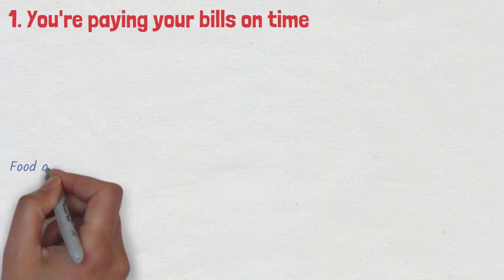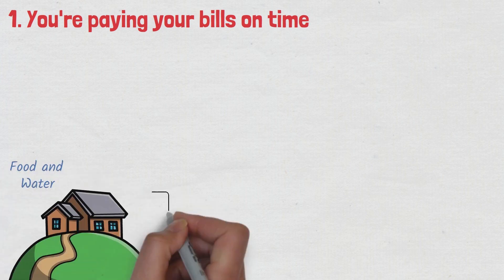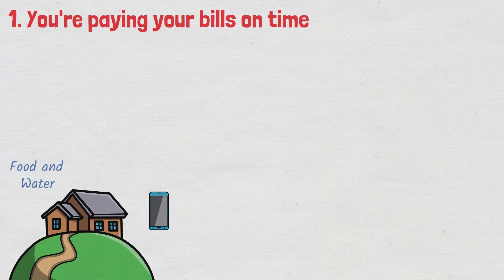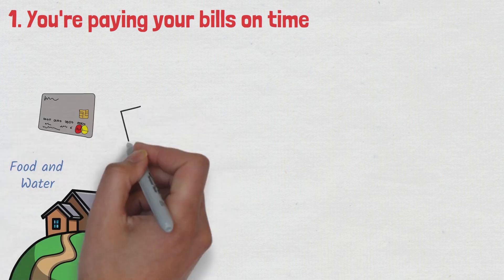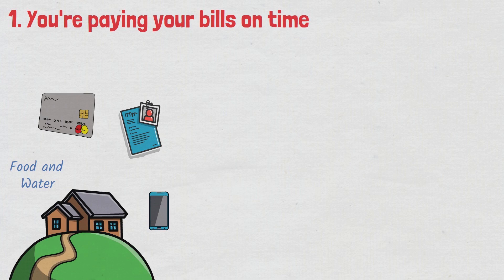Number one, you're paying your bills on time. All of us need stuff to live, right? Just like food and water, we need a place to live, a phone to use, electricity, and sometimes we even buy things with a credit card. That means we get bills, lots of bills, and every month we need to pay them.